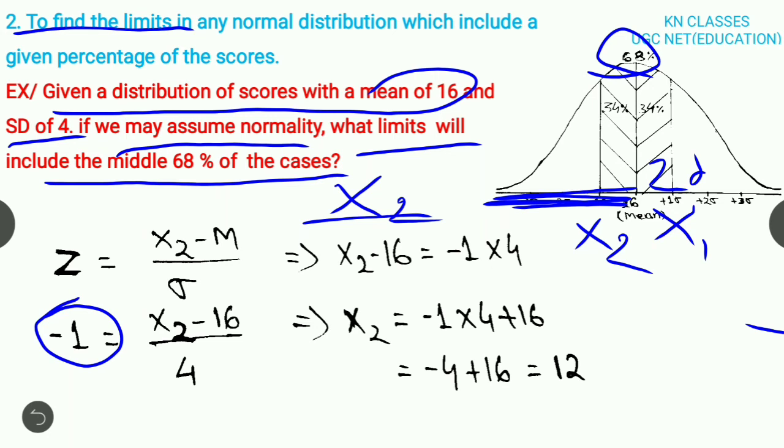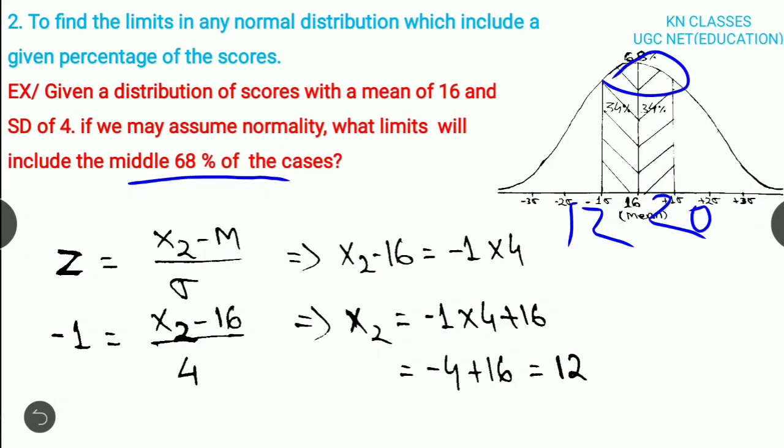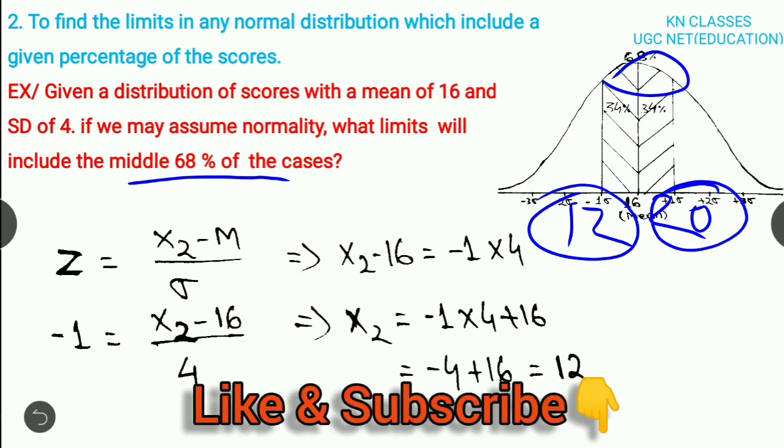According to the mathematical rule, 4 will be multiplied with negative 1, so X2 minus 16 equals negative 1 times 4. Then X2 equals negative 4 plus 16, which equals 12. So the value of X2 is 12. We have both scores: 12 and 20. This means the middle 68% falls between 12 and 20.